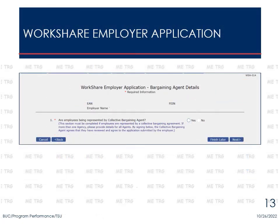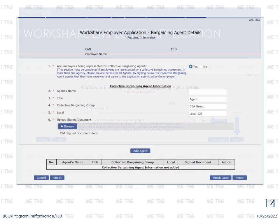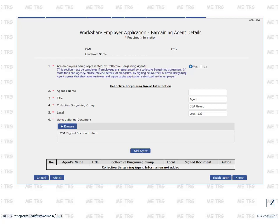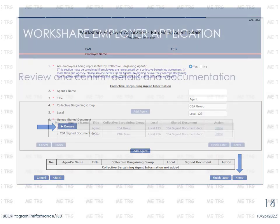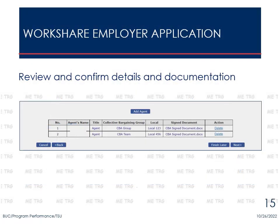If employees at your business are represented by a collective bargaining agreement, select Yes for question 1 and select Next. Answer all questions pertaining to the bargaining agent and select Assigned Document for Upload. Select Next to continue. Confirm the list of agents and included documents. To add another entry, select Add Agent. Select Delete to remove an agent. To continue on, select Next.